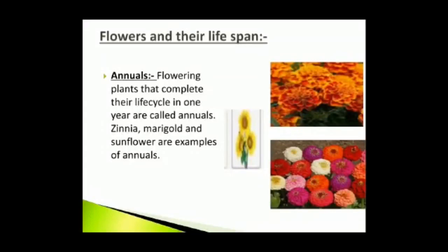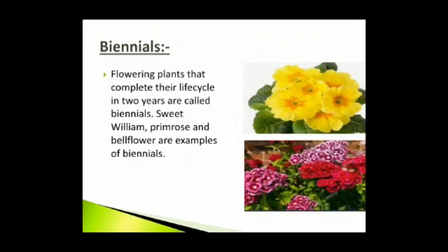Flowers and their life span — Annuals: Flowering plants that complete their life cycle in one year are called annuals. In one year they grow to full size, bloom, produce seeds and die. Zinnia, marigold and sunflower are examples of annuals. Biennials: Flowering plants that complete their life cycle in two years are called biennials. They grow to full size in the first year and produce flowers and seeds in the second year, after which they die. Sweet william, primrose and bellflower are examples of biennials.